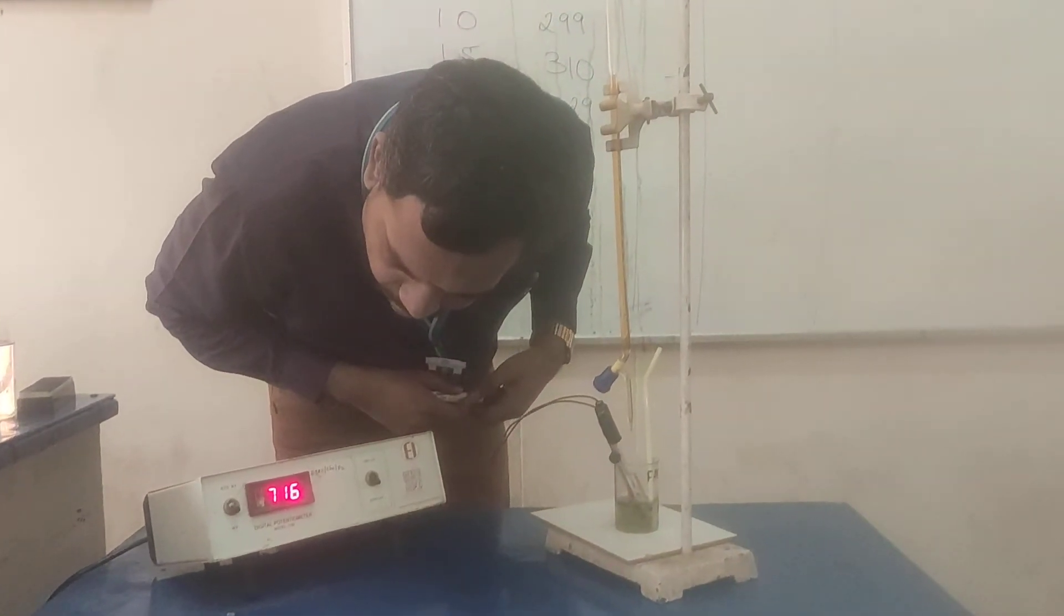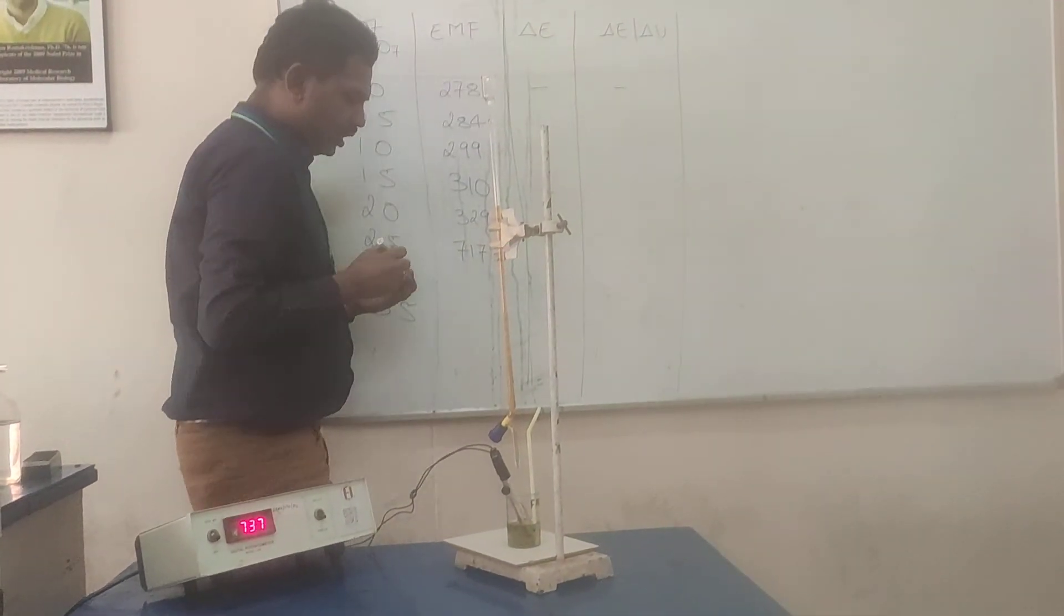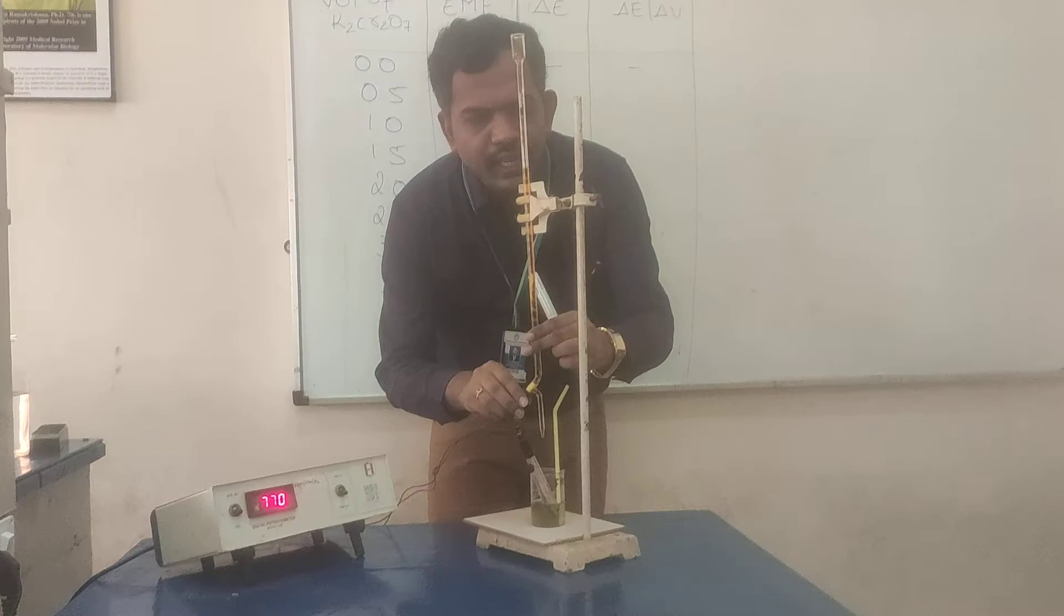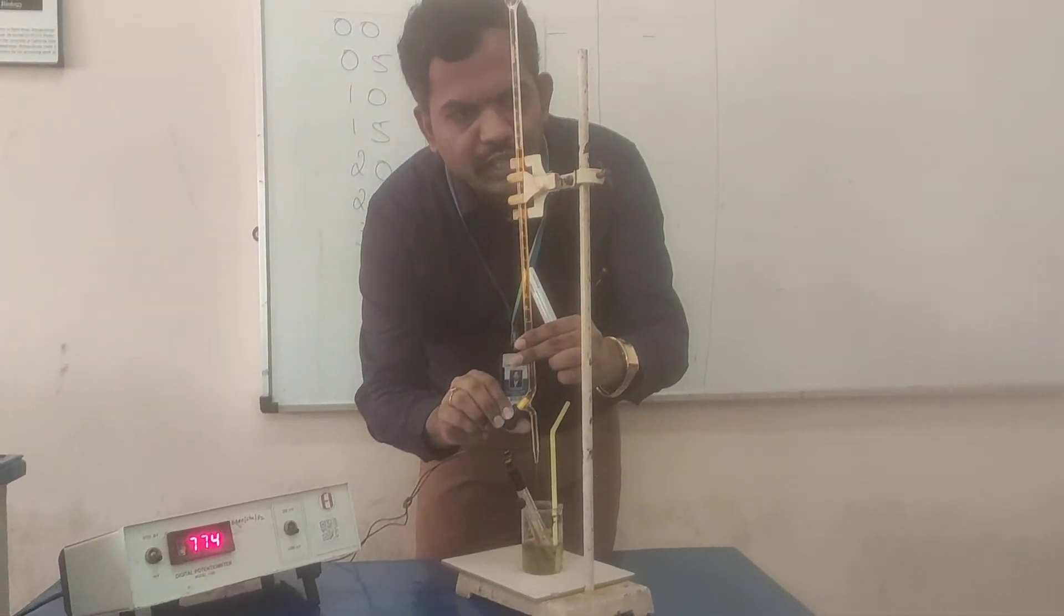Now, let us see EMF. So, EMF is almost, it's around 770. This is our jump. Now, we are going to calculate, we are going to take another 4 more readings and stop the experiment.